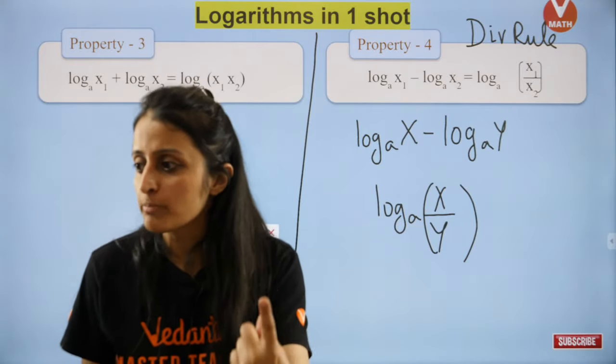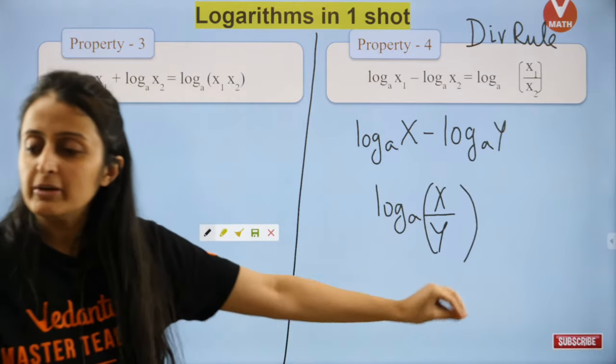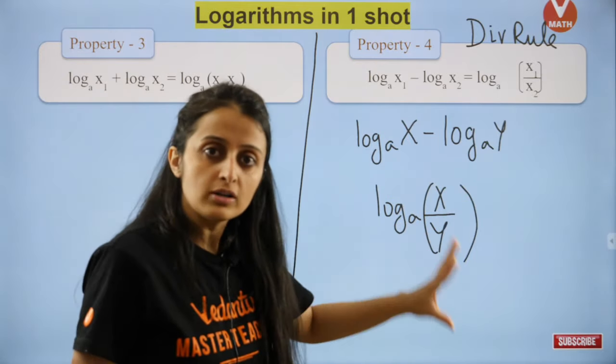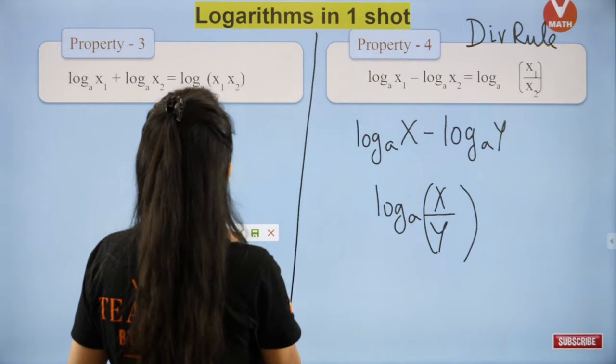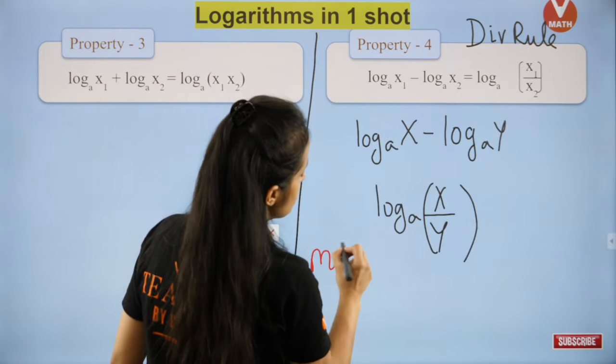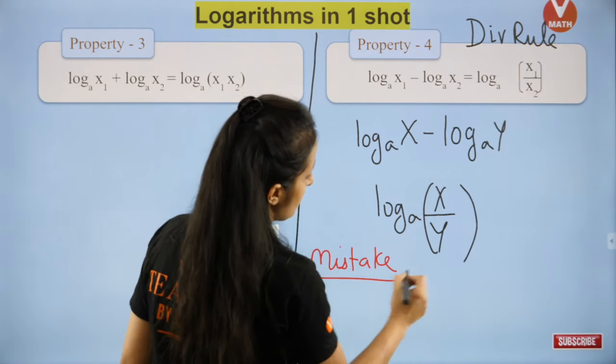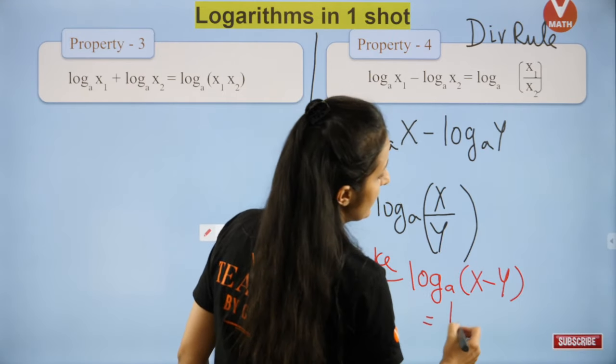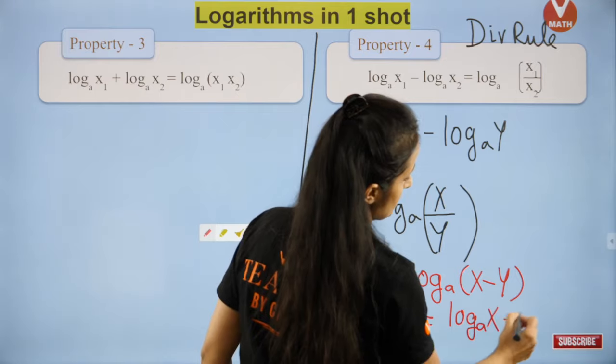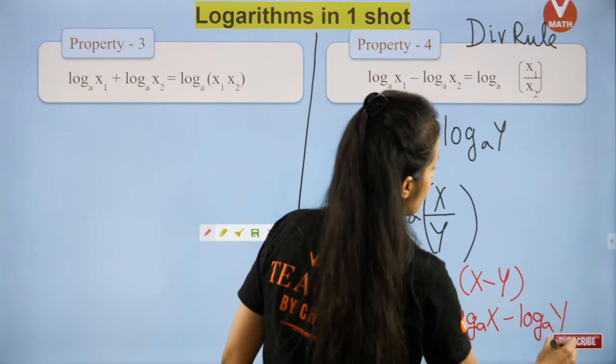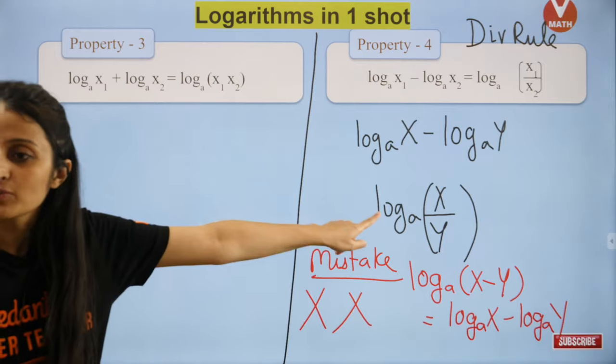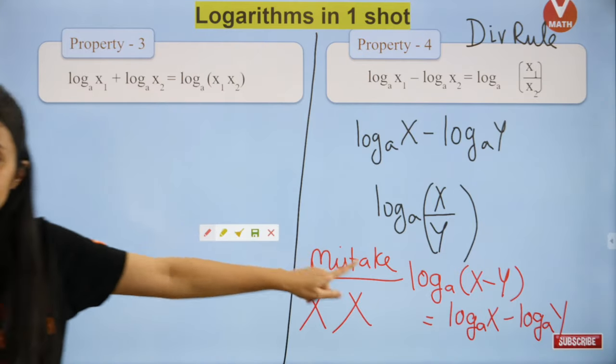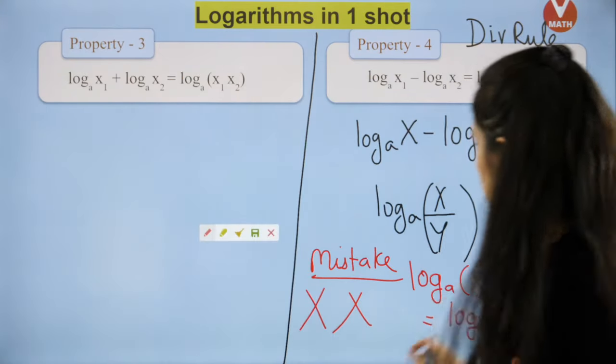This is your division rule. Log_a(x) minus log_a(y) becomes log of x upon y. Using the law of exponents you can prove this the same way. The mistake students make is writing log(x-y) = log x - log y, which is completely wrong.